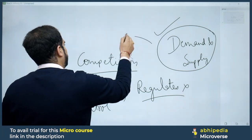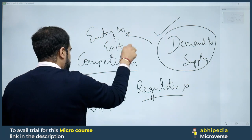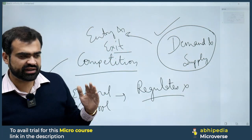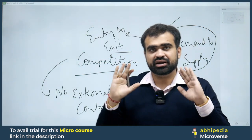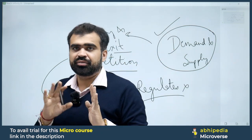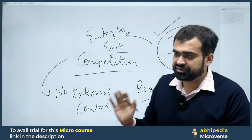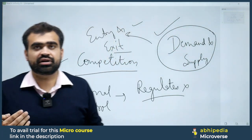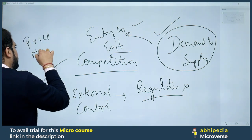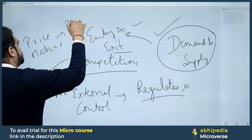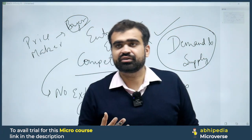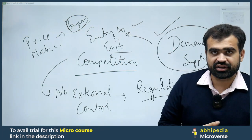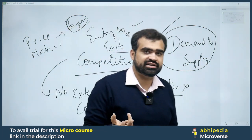Other features of a perfectly competitive market include free entry and exit — any company can enter or exit the market freely, with equal opportunity for all firms. Most importantly, in this market the buyer is the price maker and the seller is the price taker. Companies cannot set prices on their own; prices are determined by what buyers can afford and what competitors are charging.